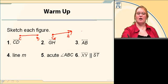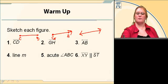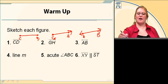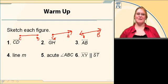Number three says to draw a line AB. So we're going to draw an arrow, draw a line from it, draw another arrow. Next to our arrows, we want to put a point A, and then a point B, and you have line AB.